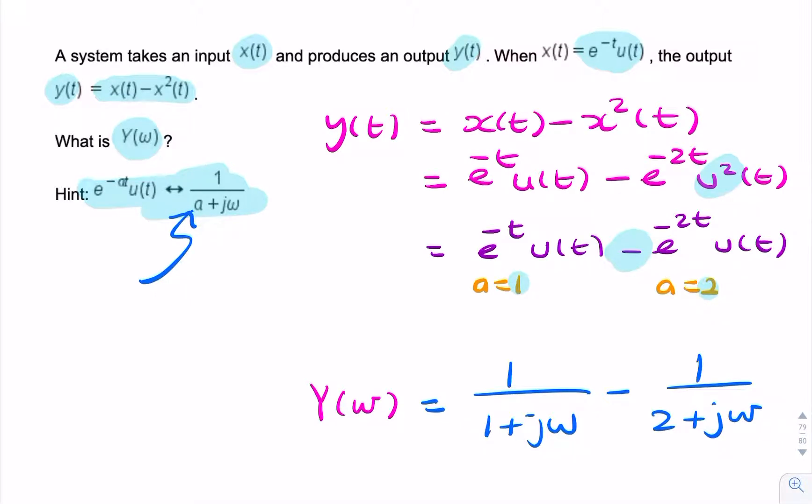All we needed to do to find Y(ω) was to first find y(t). We did that by simply substituting the signal we were given, x(t), into the expression we were given. That would be your final answer.